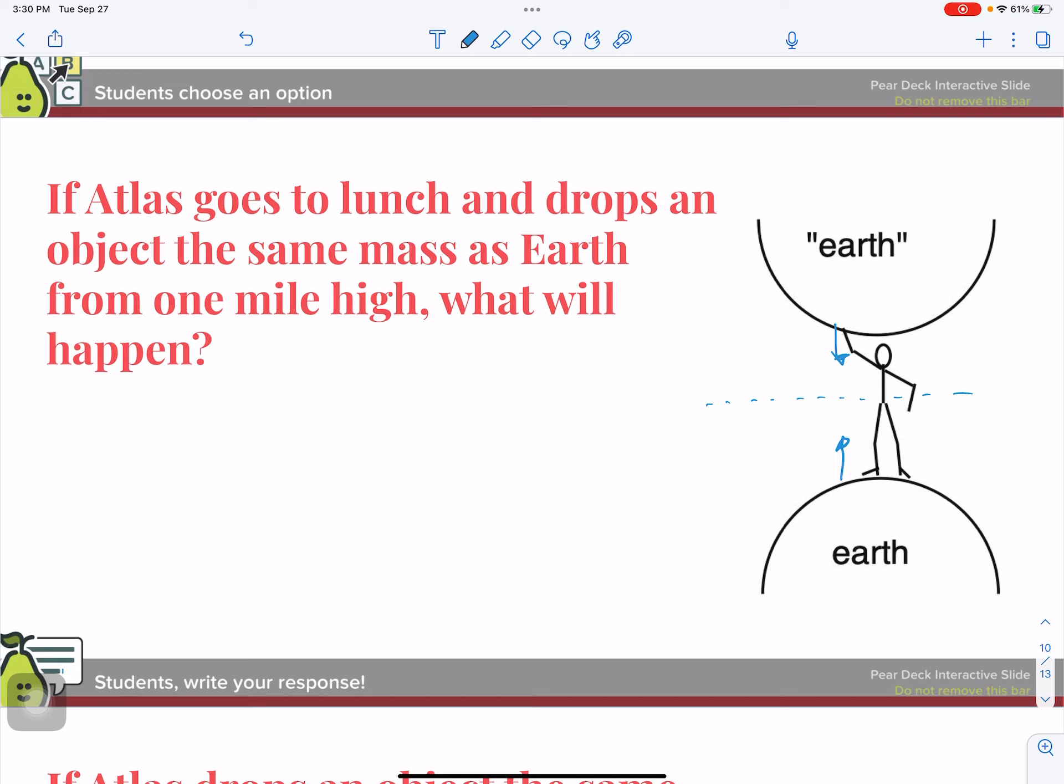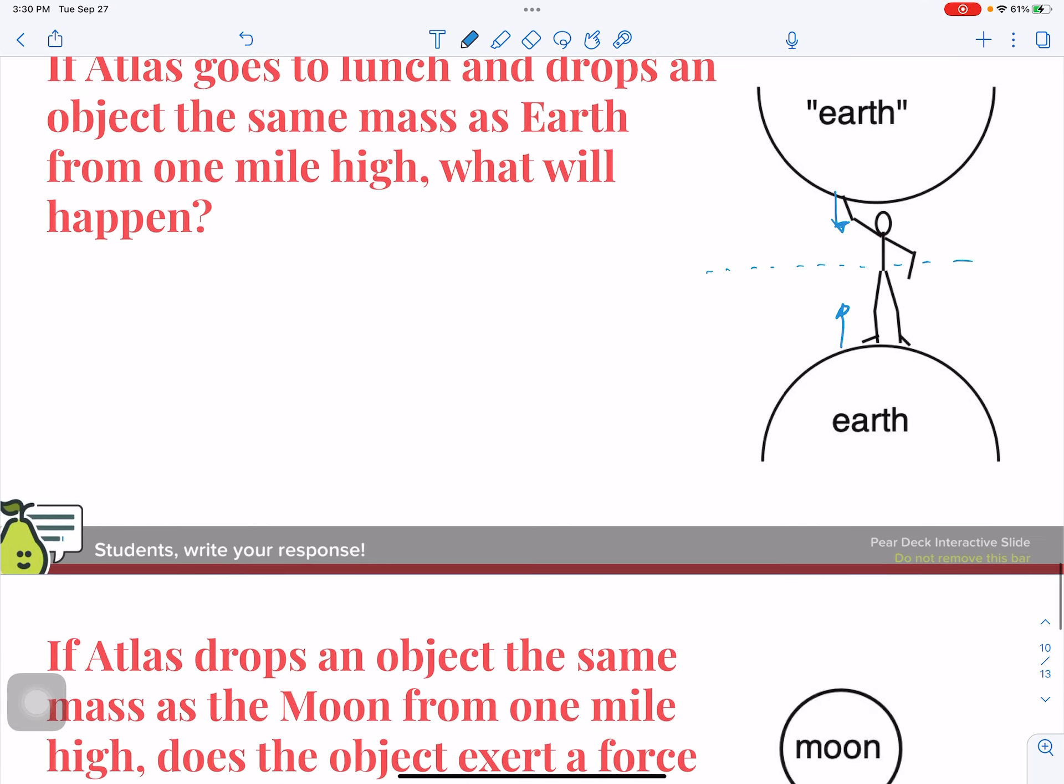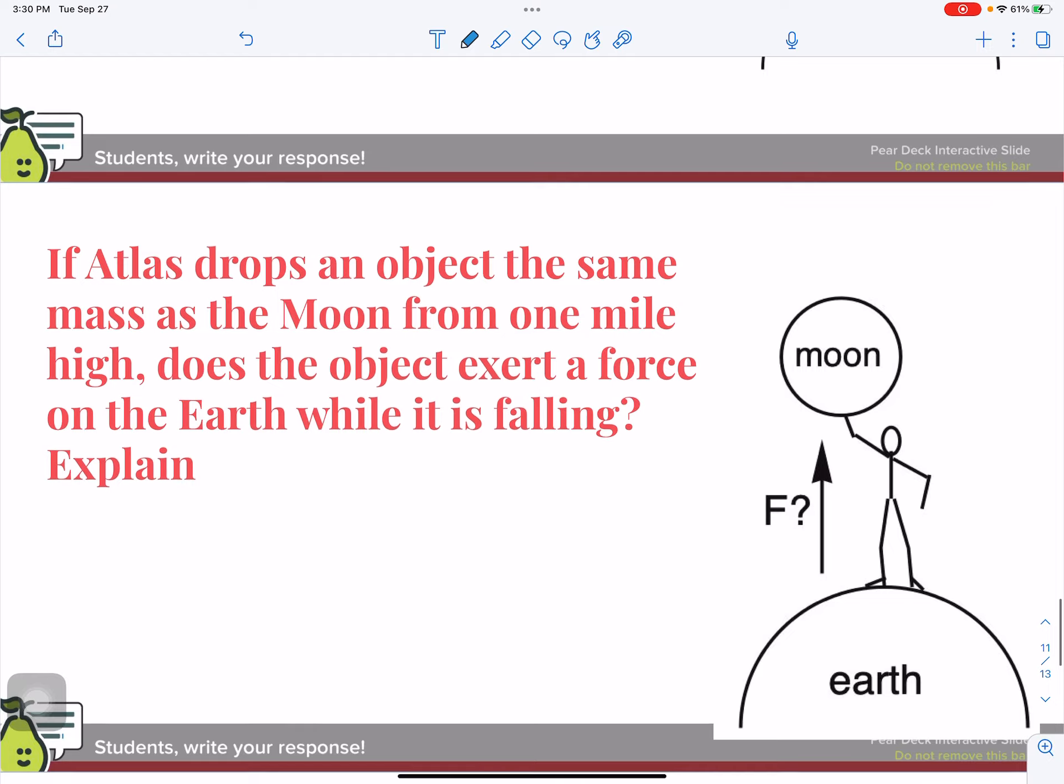But in this case, both of my objects are the same mass. And so they're going to move equally. The attraction is all the same or the force is always the same, but the motion varies. So here they're going to move equally because they have the same mass.